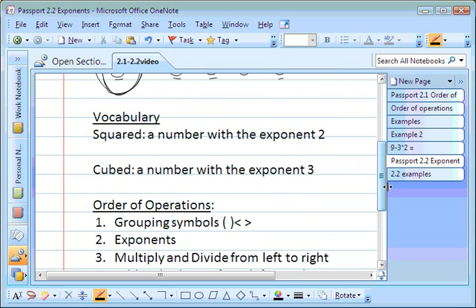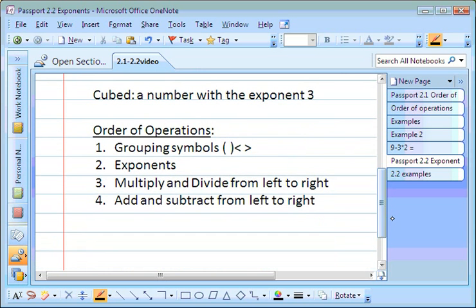Okay. Also in section 2, we had some vocabulary. Squared means a number with an exponent of 2, and cubed means a number with an exponent of 3. You will have some problems like that. Okay. And then we talked about order of operations again, and we did some problems with that. When you're using the order of operations with exponents, you simply slip exponents right here into step number 2.